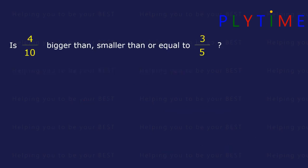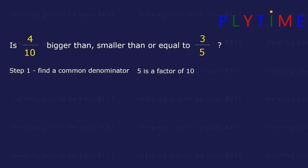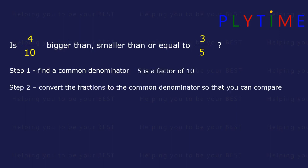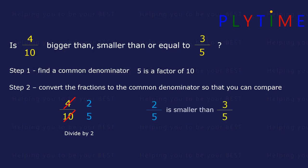Is four tenths bigger than, smaller than, or equal to three fifths? We need to find a common denominator, and five is a factor of ten. This time we could convert to fifths as the common denominator. Four tenths — we divide both by two. Four divided by two is two and ten divided by two is five. Now we can see two fifths is smaller than three fifths. Therefore four tenths is smaller than three fifths.